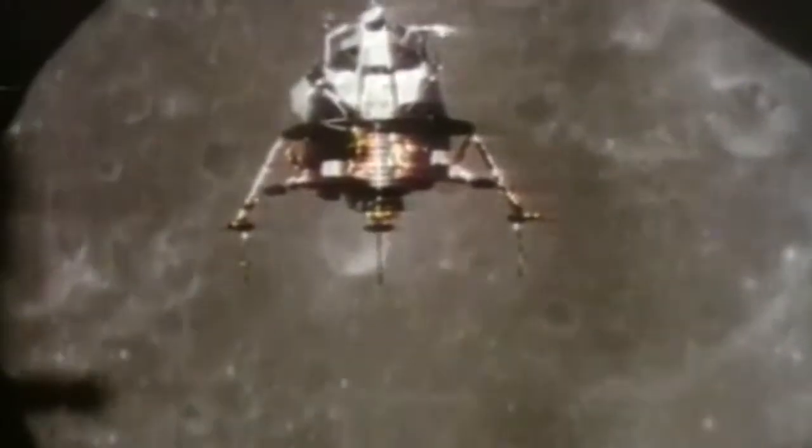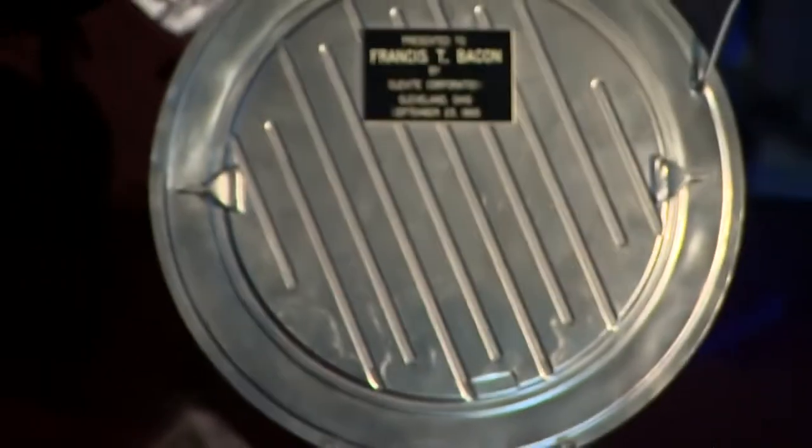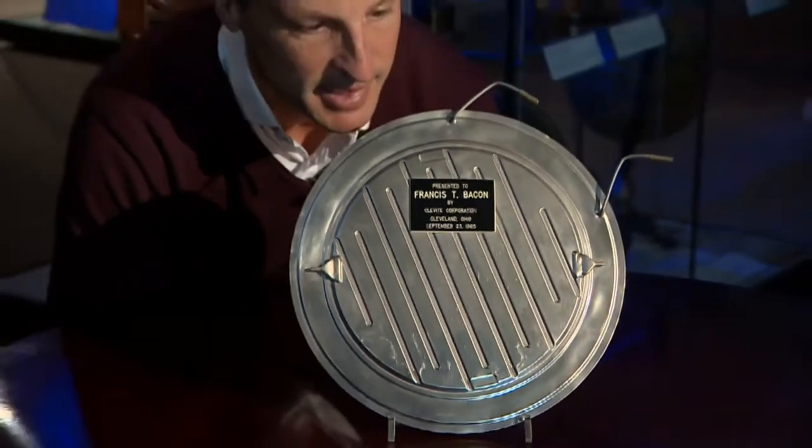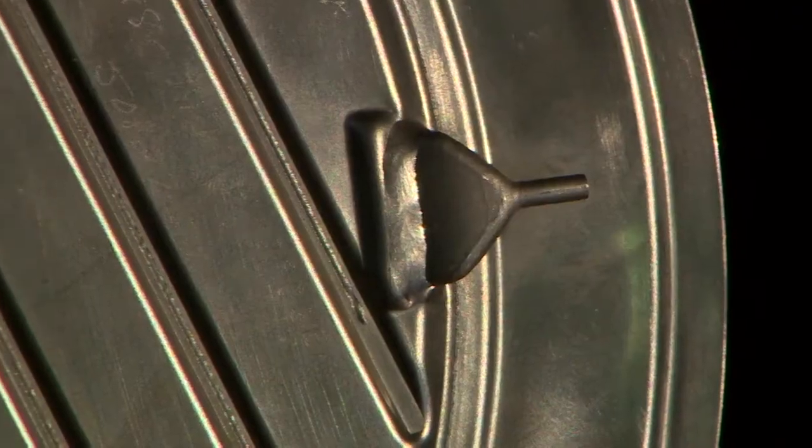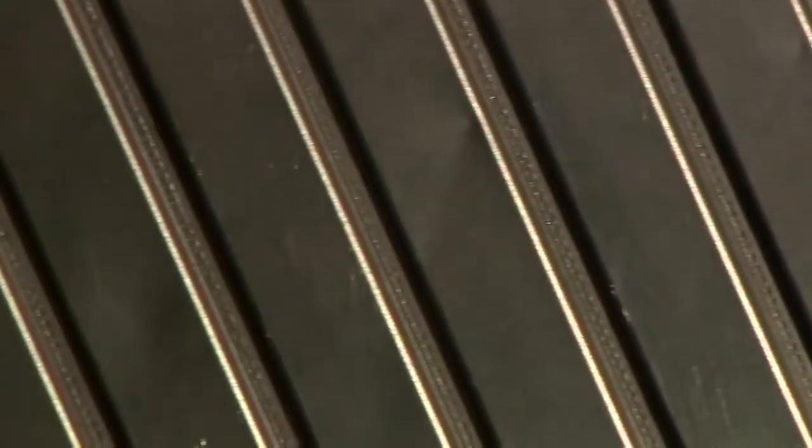And here's one part of it. It doesn't look much. This is a classic example of an object that looks so simple on the outside, is incredibly complex on the inside, and actually changed the course of history. It's an electrode from a Bacon fuel cell.